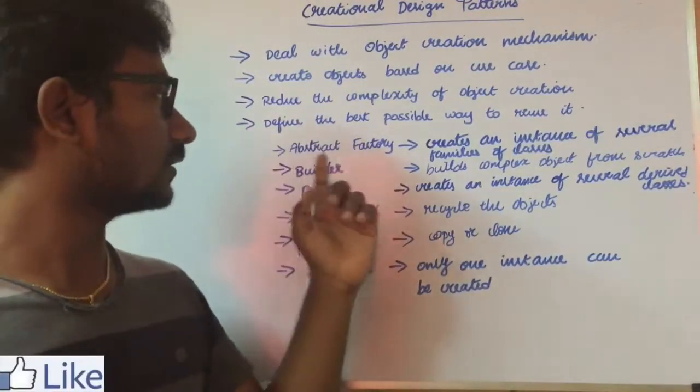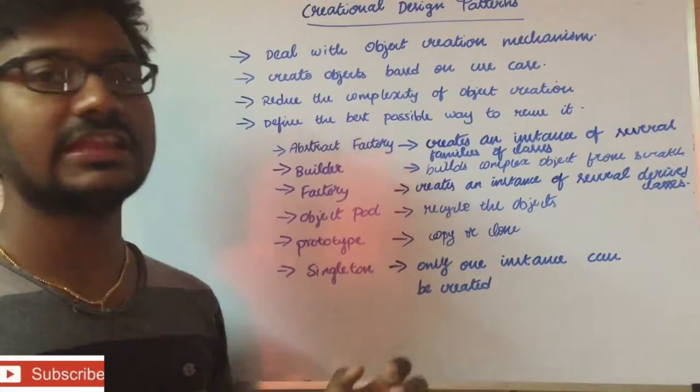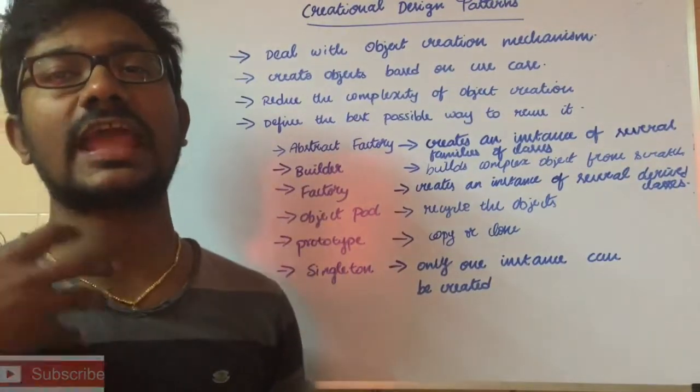It is Abstract, Builder, Factory, Object Pool, Prototype, Singleton—different categories. There are different categories.